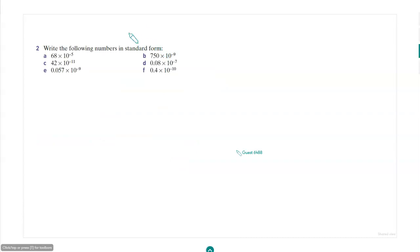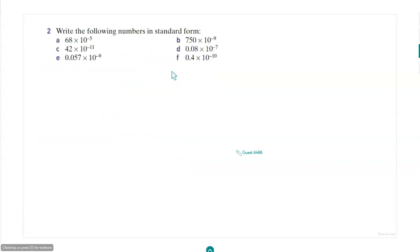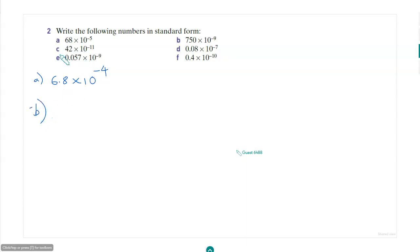Write the following numbers in standard form. For A: 6.8 times 10 to the power of negative 4. Very good. And for B: 7.5 times 10 to the power of negative 7 — that's right. Good, good.